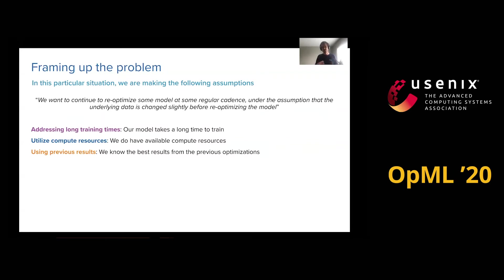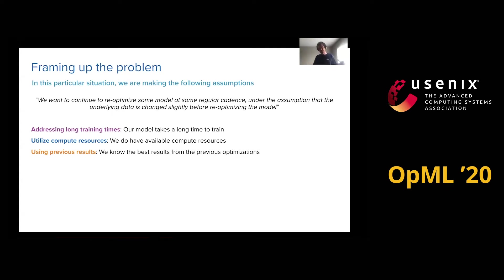In this particular situation, we are making the following assumptions. We want to continue to re-optimize some model at some regular cadence, under the assumption that the underlying data has changed slightly before re-optimizing the model. Think of that as: you have some model that goes into production, you get more and more data, and every time you have enough data, you want to re-optimize the model to see if you can make it better based on the new data, or get at least similar performance. There are a lot of challenges all the way through the pipeline, and the ones I want to talk about now sit in the optimization step.